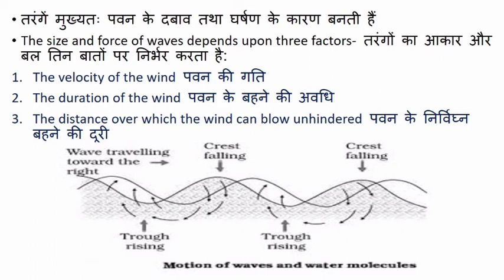If all three factors work together — if the velocity of the wind is very high, the duration is long, and it blows unhindered over a long distance — then when the wind blows in one direction at high speed for a long time, and the bottom does not interfere with the undulatory movement of the water, the formation of waves is unrestricted and full. This means the waves gain more energy and become stronger.